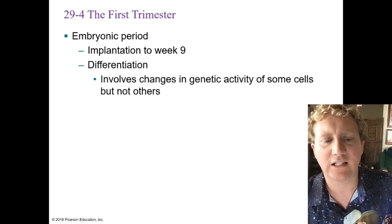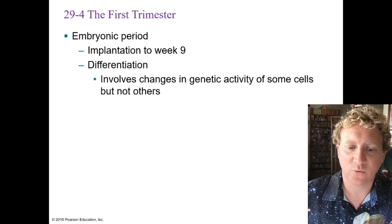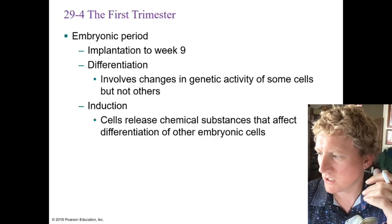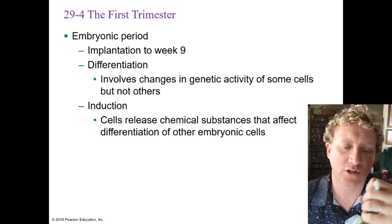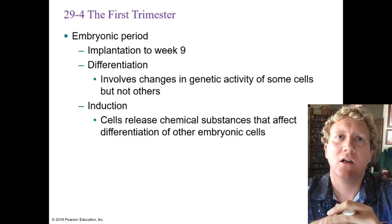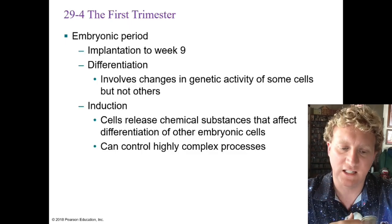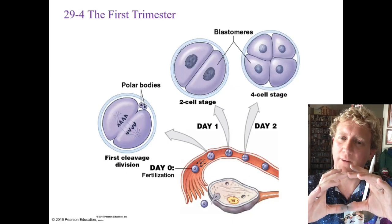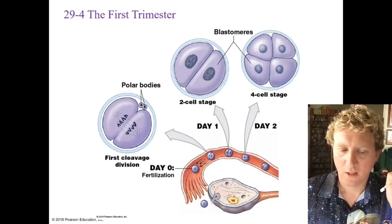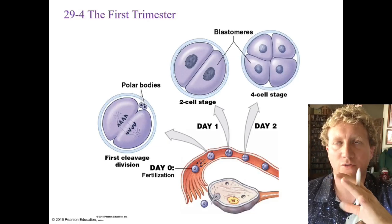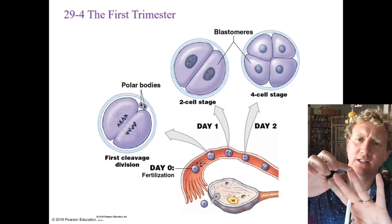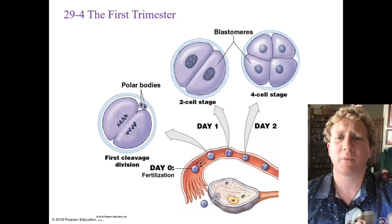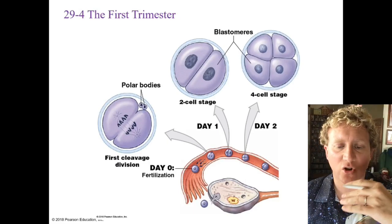The embryonic period runs from implantation to week nine. Differentiation takes place, involving genetic activity in some cells but not others — some cells learn to be head cells or foot cells. Induction is how this happens: different chemicals cause cells to move to different places and activate certain parts of their DNA. Back to cleavage — blastomeres are genetically identical cells formed by mitosis. We have a two-cell stage, four-cell stage, eight-cell stage, and a morula of about eight or more cells forming around day four.